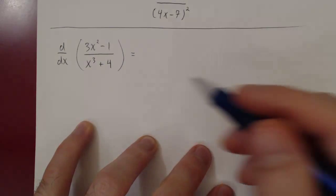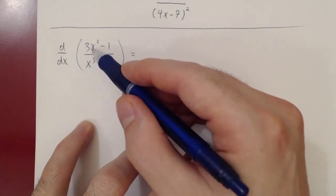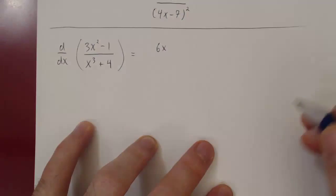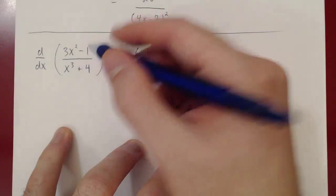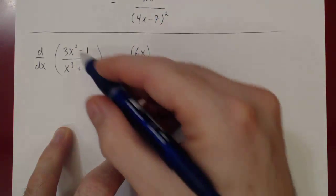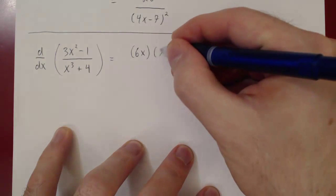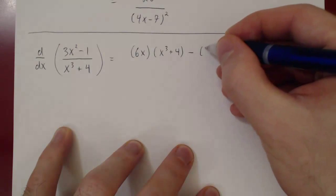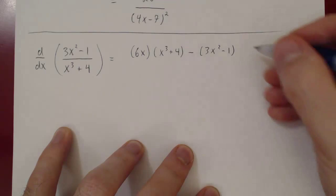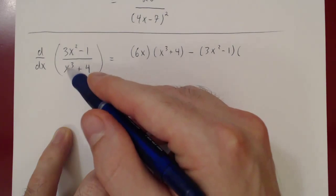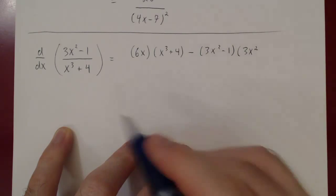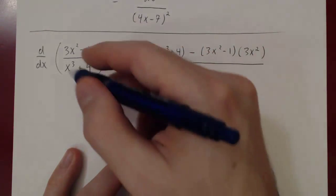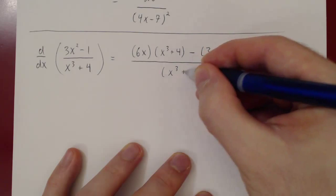Let's apply the quotient rule one more time. The derivative of the numerator: the derivative of 3x² is 3 times 2x, so 6x, and the derivative of −1 is 0, so we get 6x. That gives 6x times the bottom (x³ + 4), minus the top (3x² − 1) times the derivative of the bottom. The derivative of x³ is 3x², and the derivative of 4 is 0, so we have 3x², all over (x³ + 4) squared.